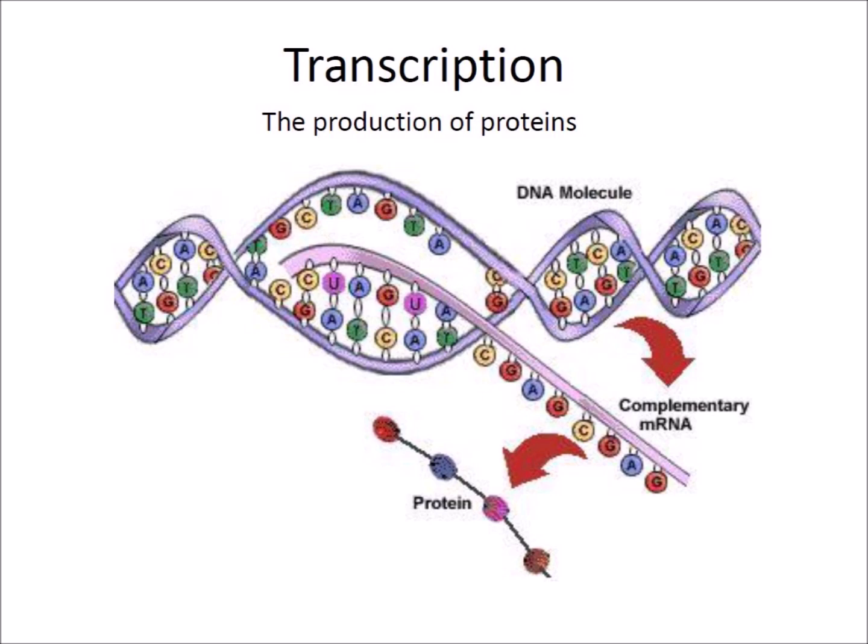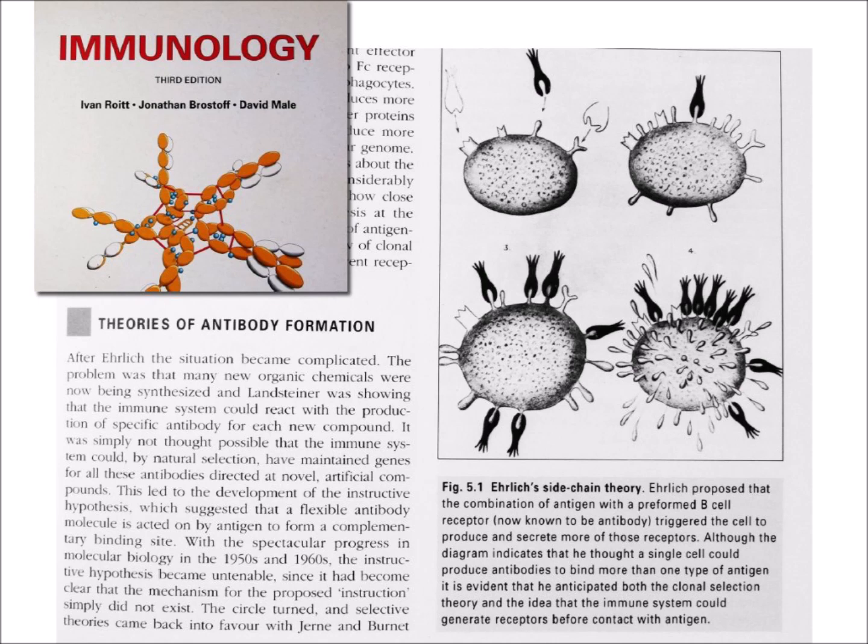Our bodies fight viral infections by producing antibodies that prevent the replication of the virus. The biological mechanism for producing antibodies is complicated and requires receptors in the cells to produce antibodies for the specific toxins or other foreign substances that induce the immune response.